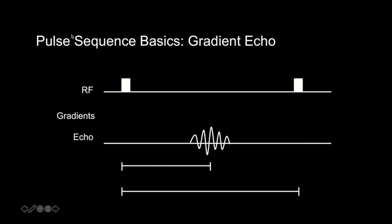So we have this RF pulse, gradients do their thing, and then sometime later we have an echo — this is a gradient echo. This is signal that we can sample, and then we do it again a little bit later with another RF pulse and then another echo.